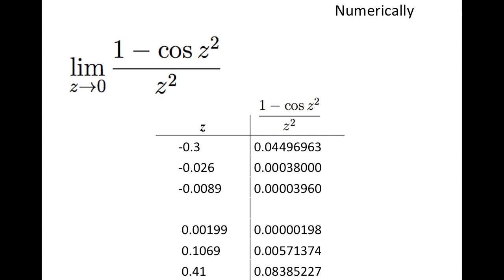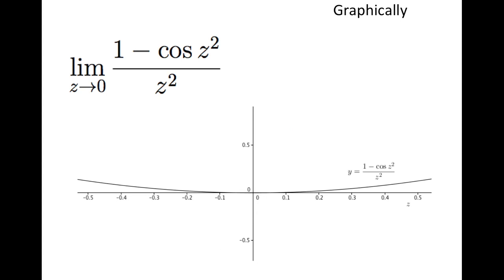We can look at this limit numerically. For values of z that are close to 0, some less than 0 and some greater than 0 and close to 0, we see that when z is close to 0, 1 minus cosine of z squared divided by z squared is also close to 0. We also see this graphically — when z is close to 0, the graph of the function shows that the y-values are also close to 0.